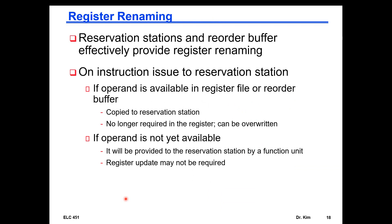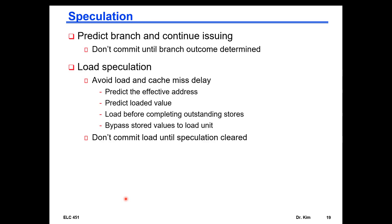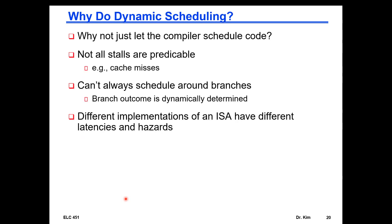Speculation means issuing instructions while assuming a hazard will not occur. The compiler's speculation is less successful than hardware speculation because the compiler cannot foresee the dynamic nature of what's really happening at runtime. The hardware, observing the code as it actually runs, can speculate more accurately. This is the core reason why dynamic multiple issue outperforms static multiple issue.